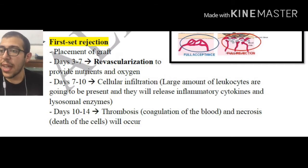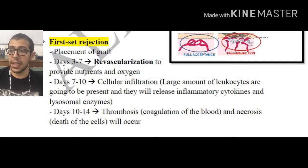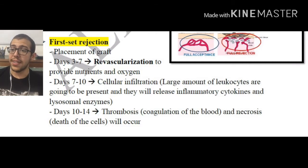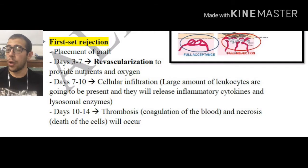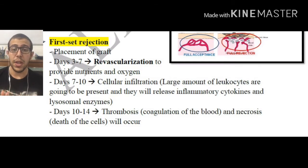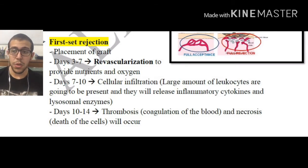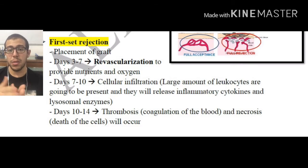Days 7 to 10, cellular infiltration is going to be taking place. That means large amounts of leukocytes — or white blood cells — are going to be present, and they are going to be releasing inflammatory cytokines and lysosomal enzymes. We'll be talking in a later video about these inflammatory cytokines and how they affect cells. Essentially this is where everything is going to be deteriorating for this graft.